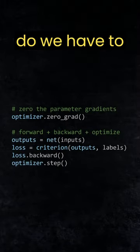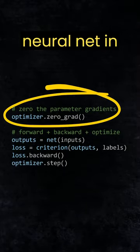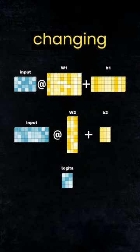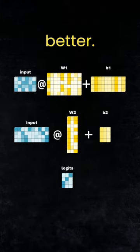Have you ever wondered why we have to call the zero_grad method when training a neural net in PyTorch? When training a neural net, we're basically changing weights and biases to fit the data better.